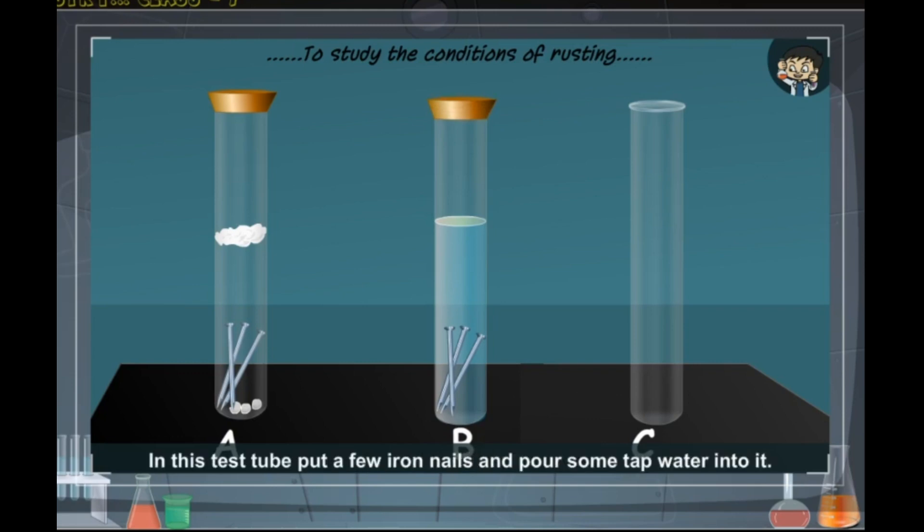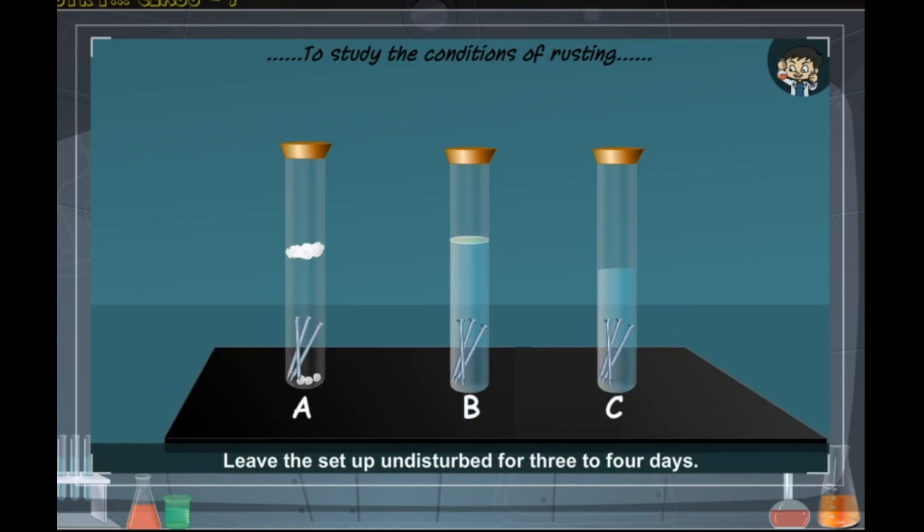Test tube C: In this test tube, put a few iron nails and pour some tap water into it. Close the test tube with a rubber stopper. Leave the setup undisturbed for three to four days.